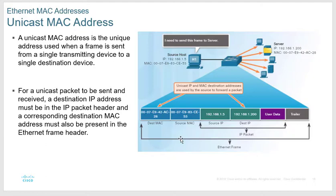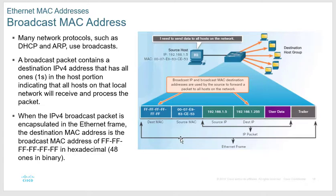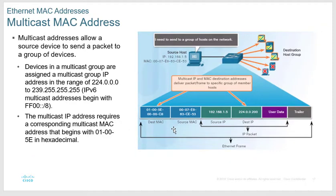If you don't know where the destination is, you send a broadcast — one to all. A MAC address of all F's is a broadcast. You'll see these in Wireshark where the destination MAC address is all F's — that's somebody looking for something. We typically use broadcasts in DHCP when looking for an IP address: your PC starts up without an IP, sends a broadcast asking for one, and the DHCP server responds.